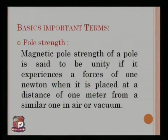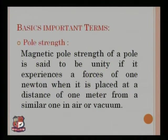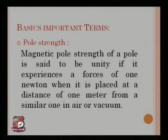The next basic term is pole strength. Magnetic pole strength of a pole is said to be unity if it experiences a force of one newton when it is placed at a distance of one meter from a similar pole in air or vacuum.